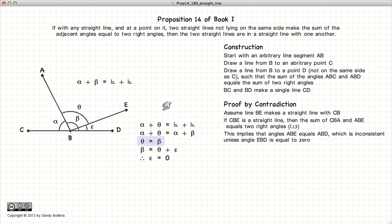If epsilon is equal to zero, then BE and BD are lying on the same line, so CBD is indeed a straight line.